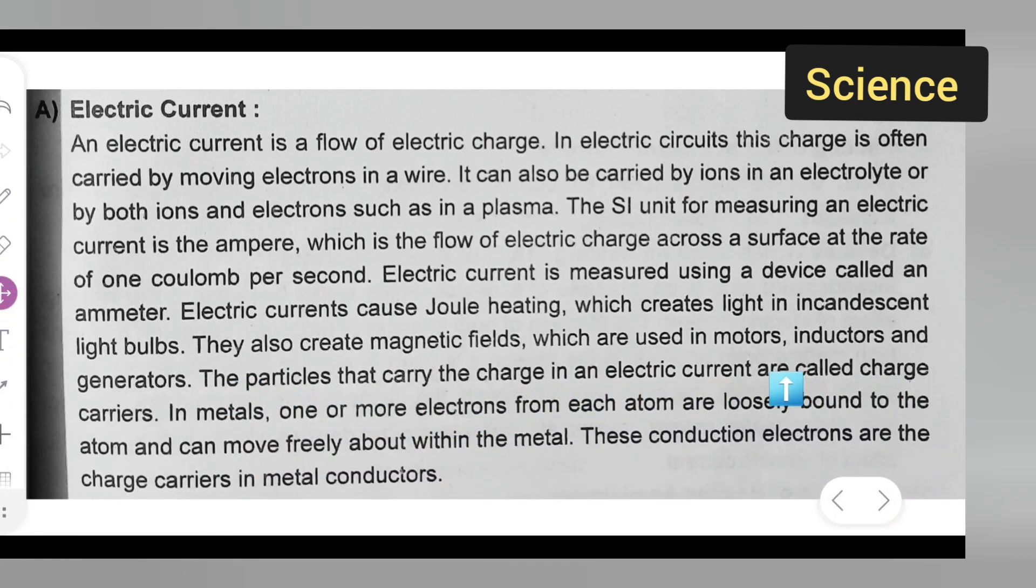In metals, one or more electrons from each atom are loosely bound to the atom and can move freely about within the metal. These conduction electrons are the charge carriers in metal conductors.